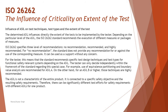The second part of this topic is the influence of ASIL on test techniques, test types, and the extent of the test — essentially how safety constraints determine which techniques are usable and what types of tests should be conducted. The determination of ASIL directly influences the extent of testing to be implemented by the tester. Depending on the ASIL level — A, B, C, or D — the ISO 26262 standard recommends the execution of different measures or packages of measures.